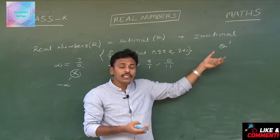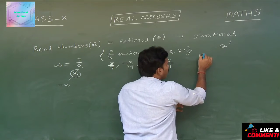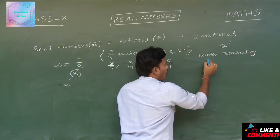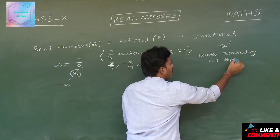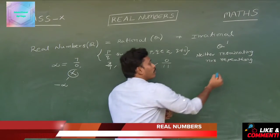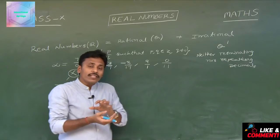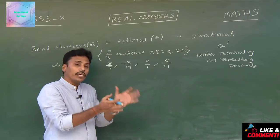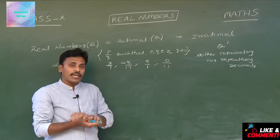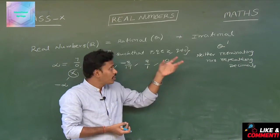As you learnt in your ninth class, irrational numbers are the numbers which are neither terminating nor repeating decimals. Whereas terminating decimals and repeating decimals can easily be converted into rational form. So the decimal representation of rational numbers contains terminating and repeating decimals, whereas neither terminating nor repeating decimals are termed as irrational numbers.